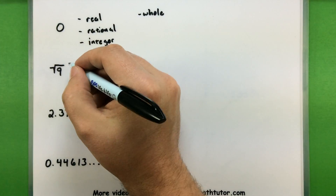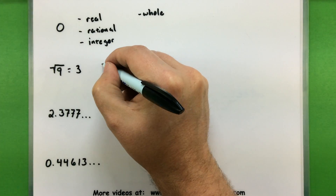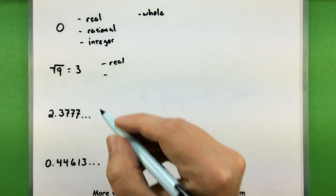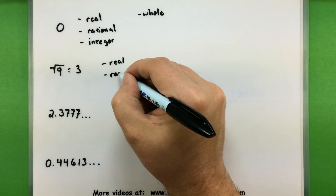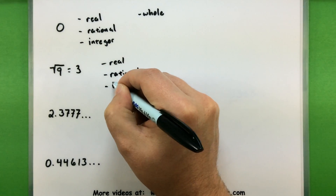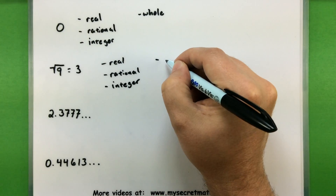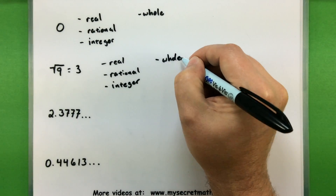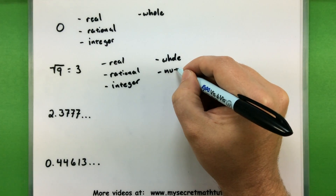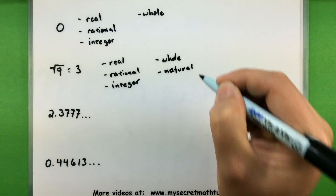Square root of 9 — this can be simplified into the number 3. Three is a type of real number. Three can be written as a fraction by writing it over one, so it is rational. It is an integer. It is a whole number. And lastly, it is one of our counting numbers, or what we call natural numbers.